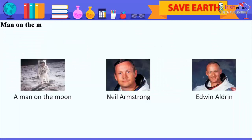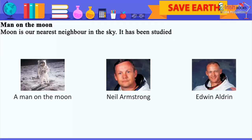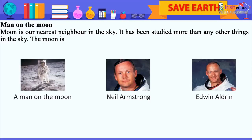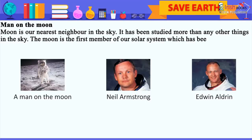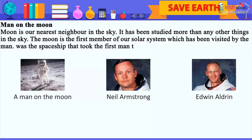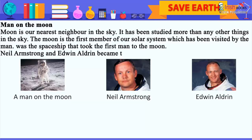Man on the Moon: The moon is our nearest neighbor in the sky and has been studied more than any other object in the sky. The moon is the first member of our solar system visited by man. Apollo 11 was the space ship that took the first man to the moon. Neil Armstrong and Edwin Aldrin became the first two men to walk on the moon.